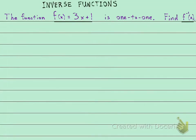We're going to find the inverse of a function. They give us the function f(x) = 3x + 1 and they're telling us that it is one-to-one. They have to say that because if it's not one-to-one, it's not invertible, and they want us to find the inverse.